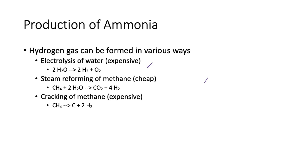Electrolysis of water is the most environmentally friendly method, whereas steam reforming of methane is the cheapest — and unfortunately, the cheap one is what gets done. So that's the production of ammonia: maximizing rate and yield, the compromise conditions, and the continuous reactor process. You need to be able to describe it clearly. Adios!